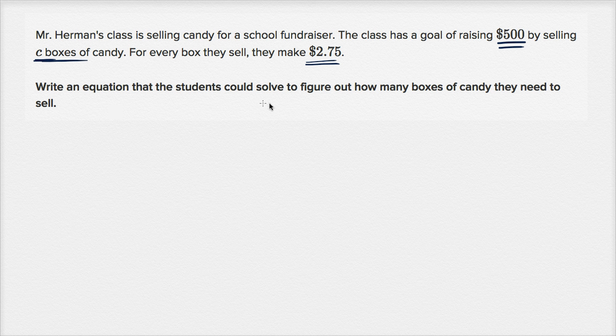Write an equation that the students could solve to figure out how many boxes of candy they need to sell. Well, there's a couple of ways you could think about it. They have a goal of raising $500, and so they want to get a total of $500. And if each box is $2.75, divide the total by the amount they get per box, and then this is going to be equal to the number of boxes that they need to sell. So this is an equation that the students could solve to figure out how many boxes of candy they need to sell.